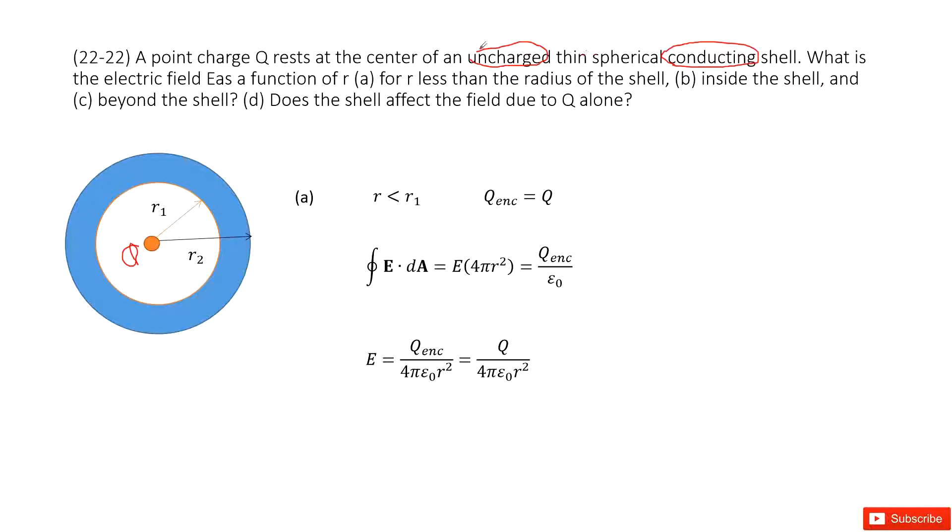This is a conducting shell. And then it asks you to find the electric field as a function of R. If the first one R is less than the radius of the shell, so we can look at this picture. This is a spherical shell. We can see this is a conducting shell. The inner radius is called R1, outer radius is R2. At the center located is a point charge Q.